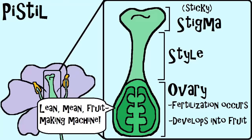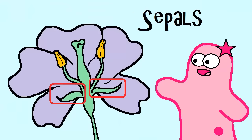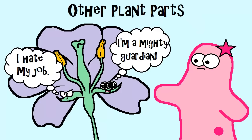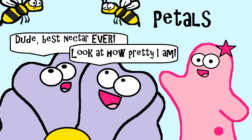Remember that the ovary will ripen into a fruit. There are some parts of the flower that are neither male nor female—sepals, for example, which protect a developing flower bud, or petals, which are fancy structures that help attract pollinators.